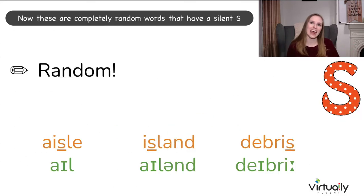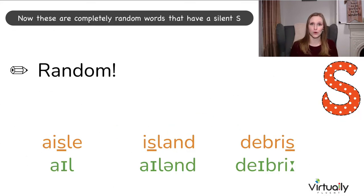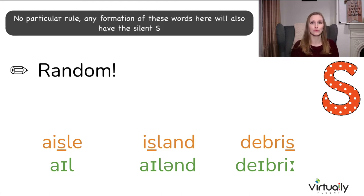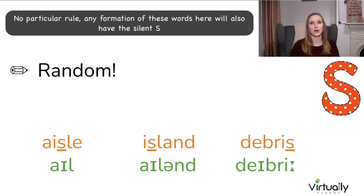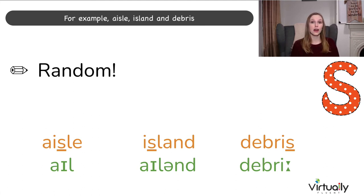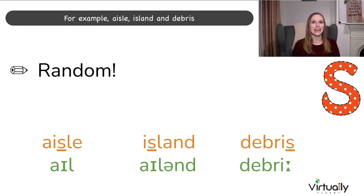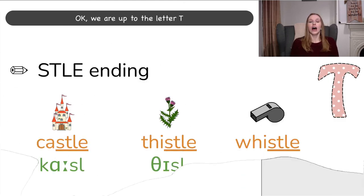We're up to the letter S. These are completely random words that have a silent S — no particular rule. Any formation of these words will also have the silent S. For example: aisle, island, and debris.